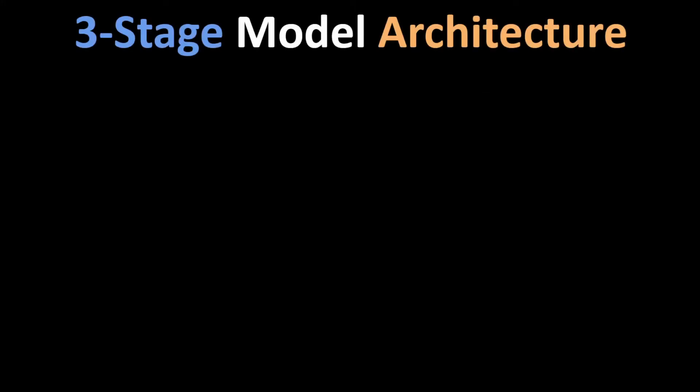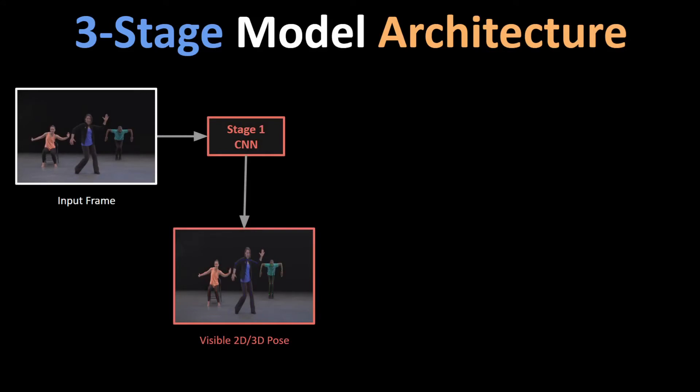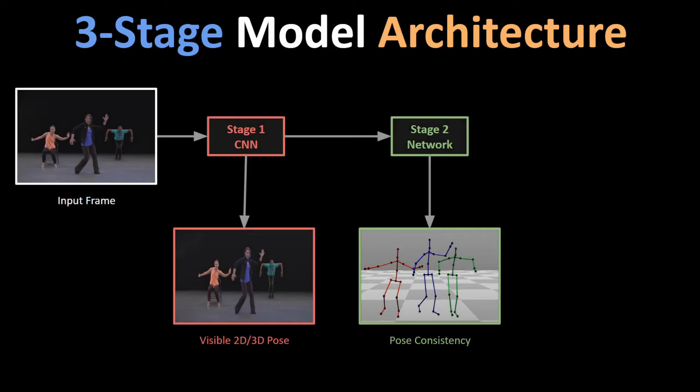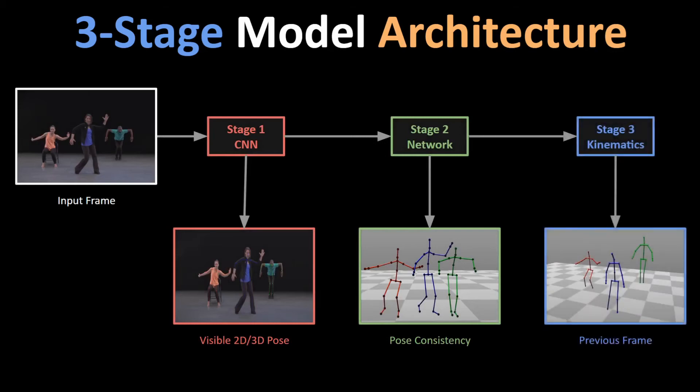The model uses a three-stage architecture. The first stage extracts the 2D and 3D pose estimates for all detected subjects fully visible in the frame. The second stage ensures consistency in body measurements and the relation of detected body parts to one another, so that an unrealistic pose is not estimated — this runs in parallel for all detected poses and also handles occlusion. The final stage reconciles all pose information and ensures temporal consistency across frames, so the entire motion is smooth over time for every pose.